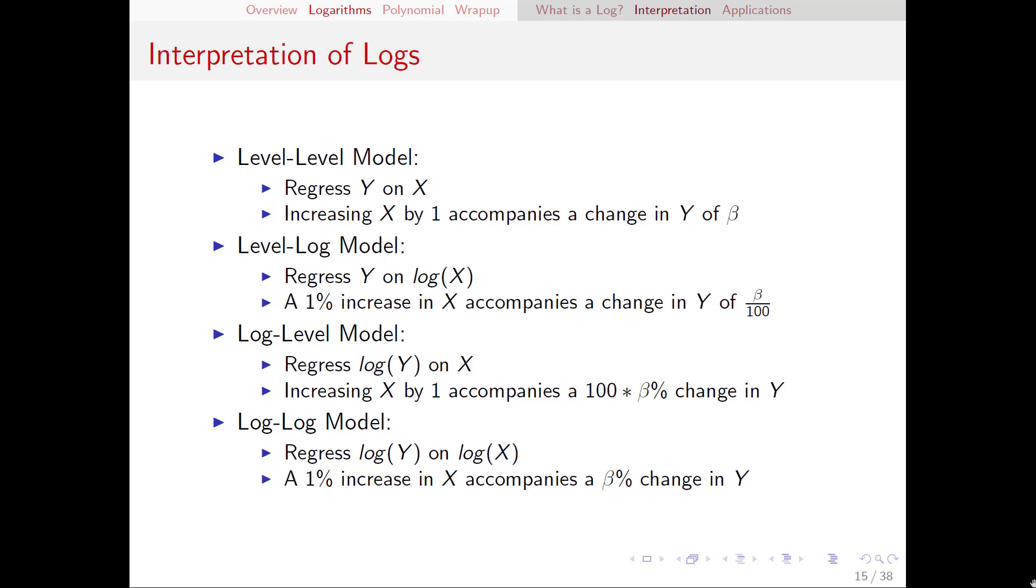Next if we take the log of x but not y we have what we call a level log model. Whenever we have logs in an equation the percentage change interpretation will always be on the variable that has the log and the absolute change will be interpreted on the variable without a log. So if we regress y on the log of x in the level log model we have a one percent increase in x which accompanies a change of y of beta divided by 100.